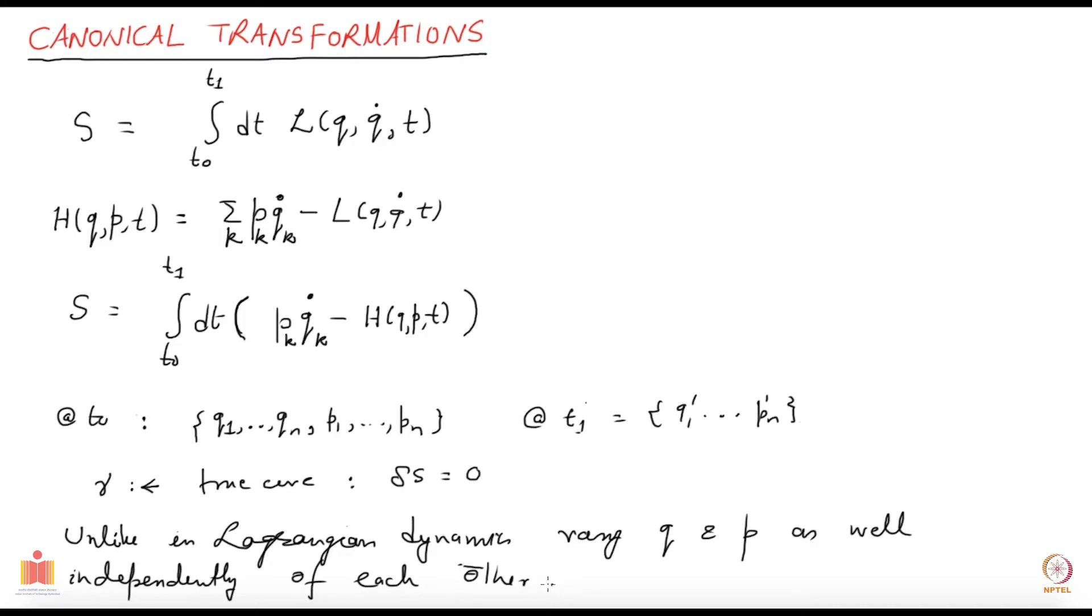That is what you do, and you run the arguments which we have already used when we were looking at the variations in the case of Lagrangian dynamics. I will leave it as an exercise. Show that if gamma is a stationary curve, meaning if you vary about the gamma, then your variations are vanishing up to first order variations, then the following conditions must be satisfied.